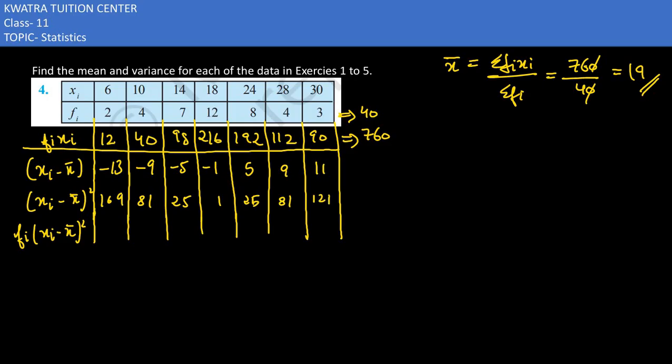9 into 9 is 81, last is 121. Last table, we have to fill in this table. What do we need to fill in this table? We need to fill fi multiplied by xi minus x̄ whole square.